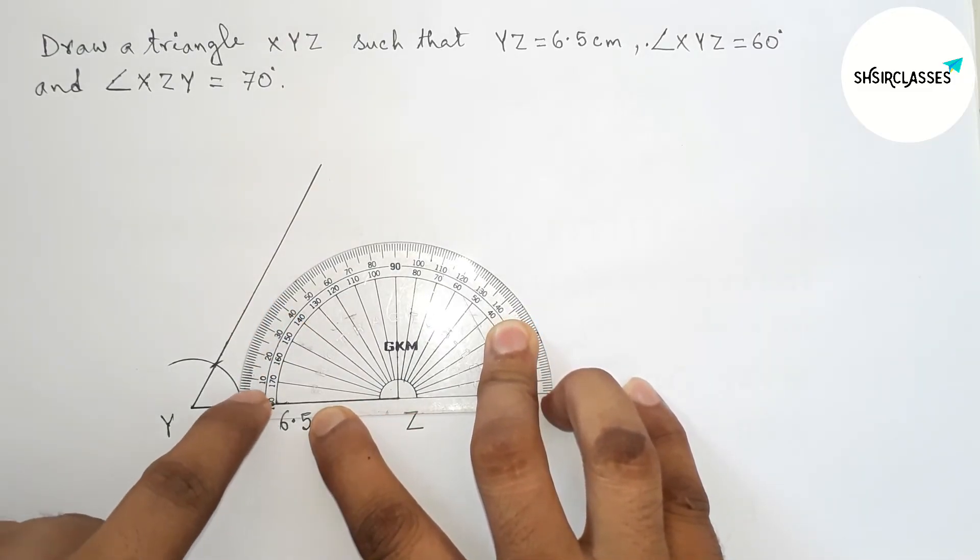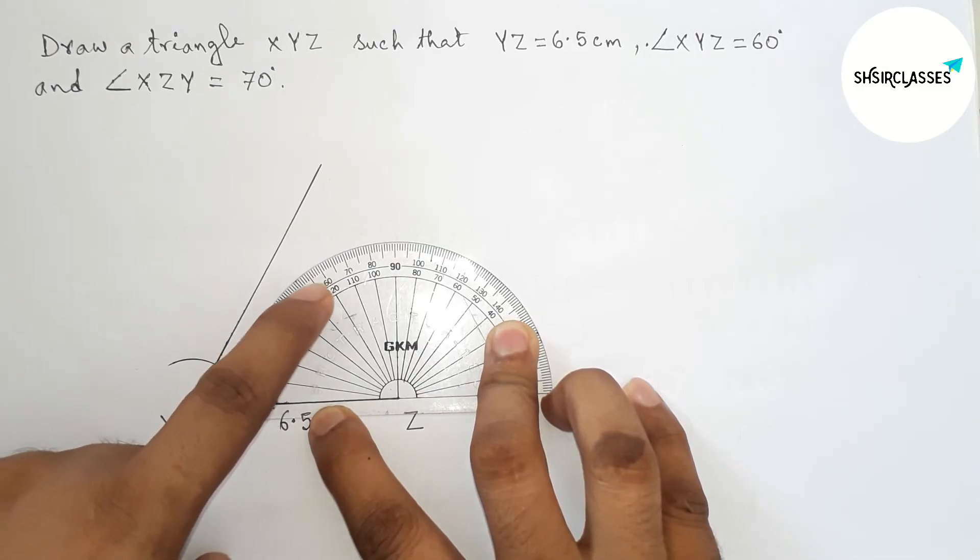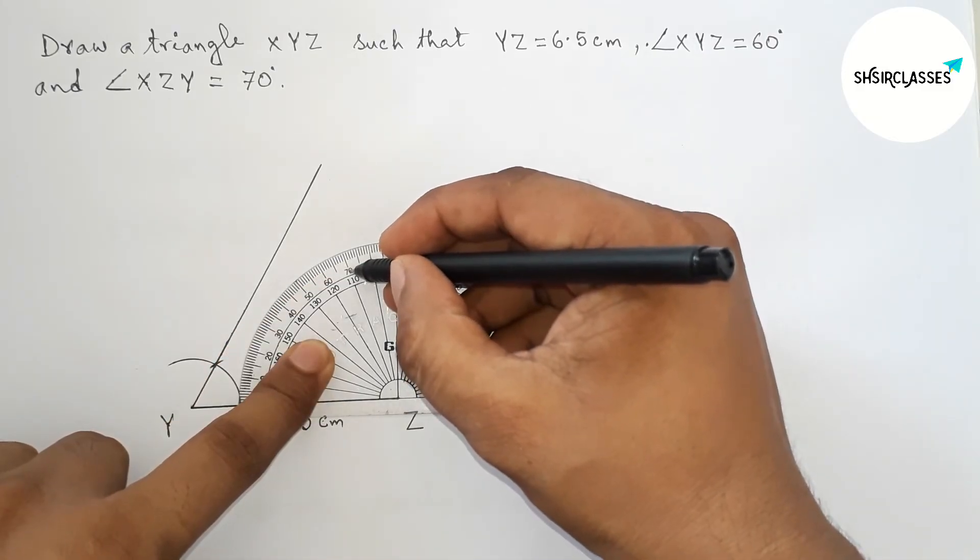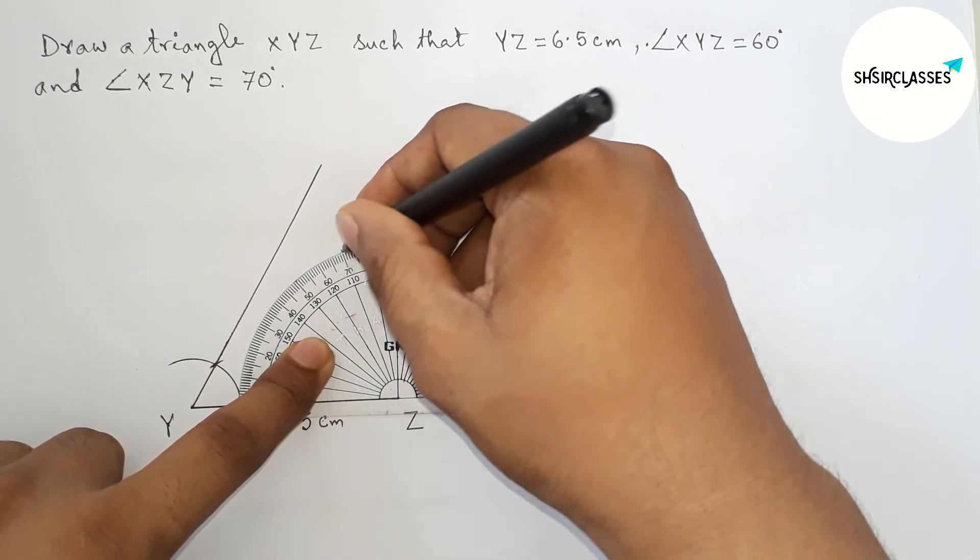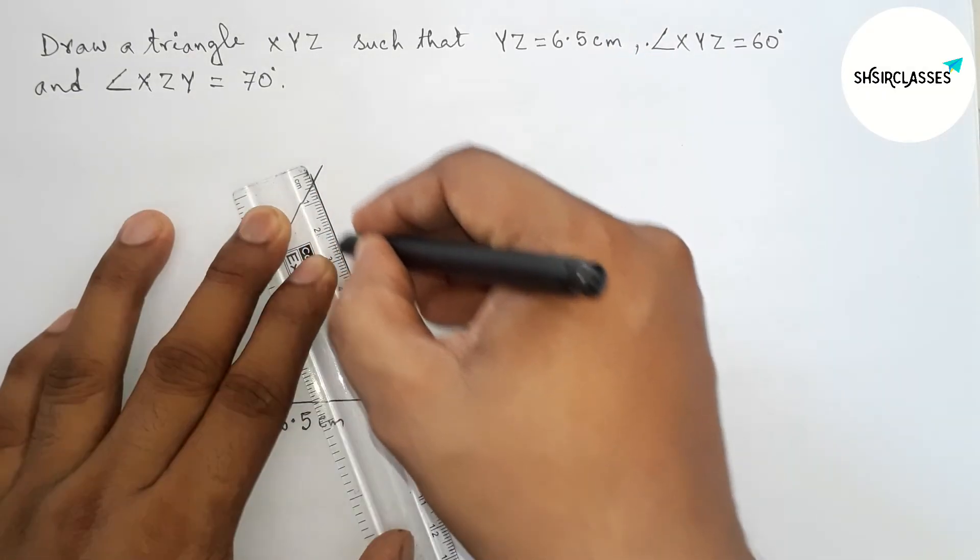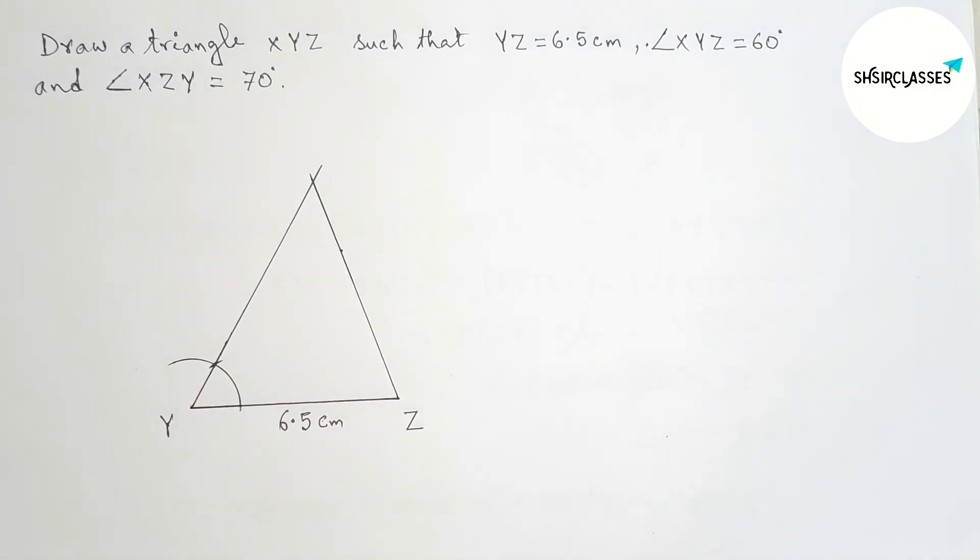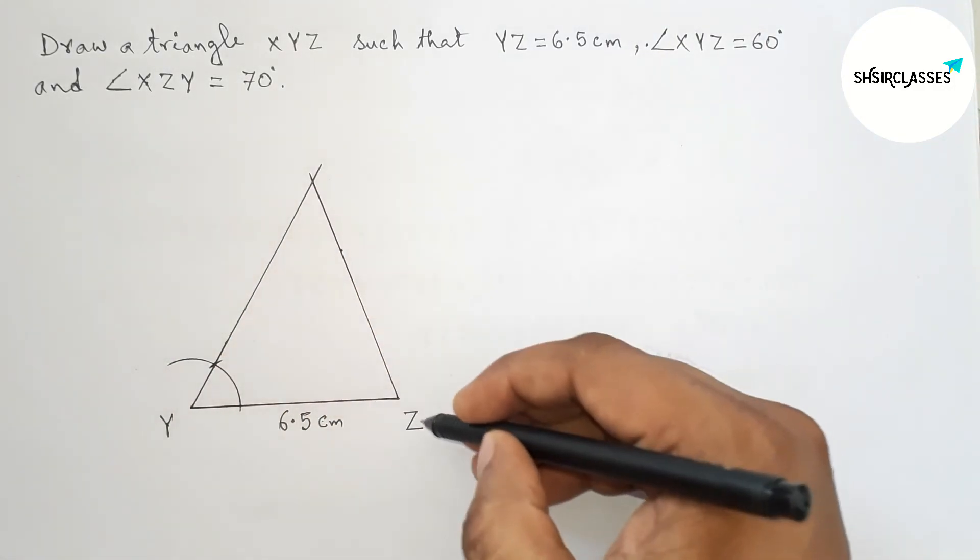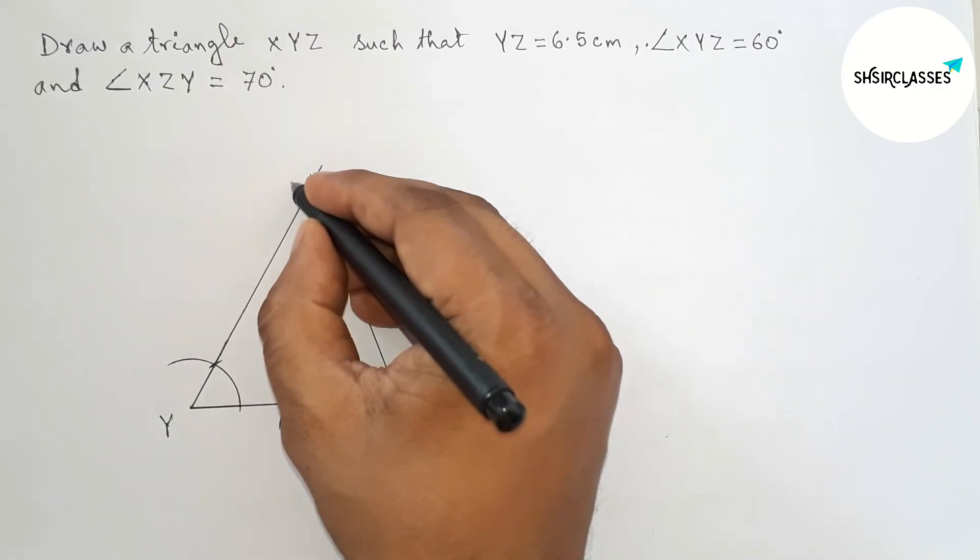So putting the protractor on the point Z, now counting 70 degrees. So here this is 70 degrees. Okay, now joining this to get 70 degree angle, and here both the lines meet at a point, so taking point here X.